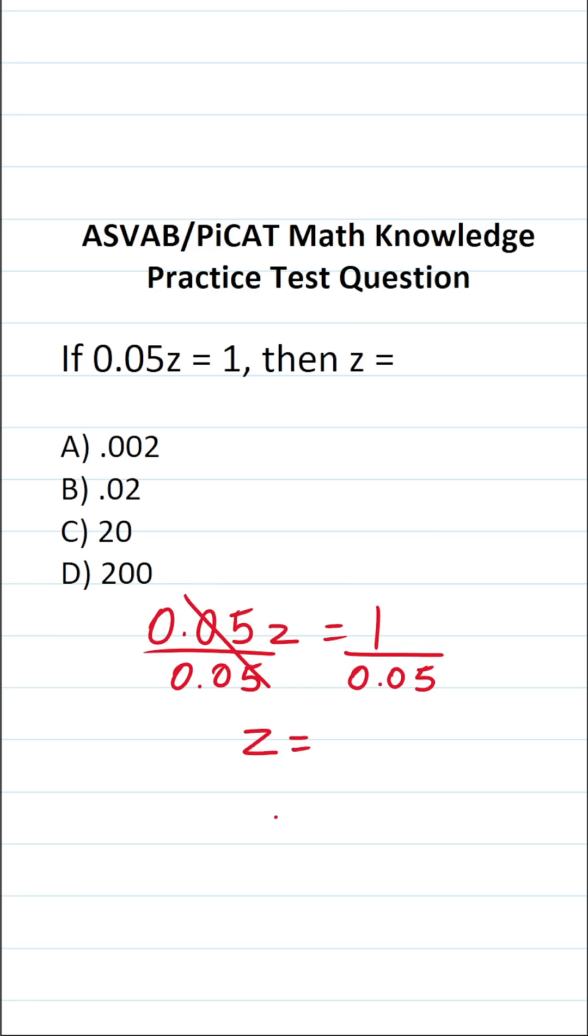That said, the tricky part of this problem is this part right here, 1 divided by 0.05. And as it happens, we're going to read that as long division like this, 1 divided by 0.05. That is to say, we're dividing 1 by a decimal.